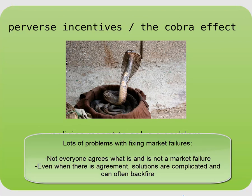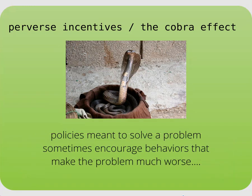Instead, many people saw this as an opportunity to make a bit of extra money. So they started cobra farms — they would basically raise a bunch of cobras, kill them whenever they needed some money, and bring those dead cobras to the British authorities. But eventually the authorities figured this out and stopped offering the cash reward. However, if you're a cobra farmer and you suddenly have nowhere to sell your cobras — unless you just like having a bunch of cobras in your yard — you let them go. And that's just what happened most of the time.